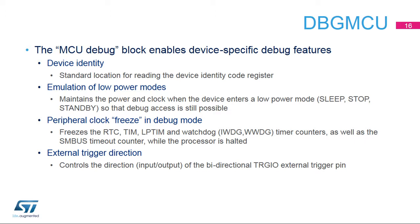Peripheral clock freeze is particularly useful to prevent a watchdog timeout from resetting the device while debugging, without having to rearm the watchdog with the debugger. It also allows timer values to be inspected and corresponding interrupts to be suspended until normal operation is resumed. The trace CLK EN bit ensures that the trace port output is only clocked when needed, avoiding unnecessary power consumption. On certain packages, the TRG-IN and TRG-OUT pins are not available; only the bidirectional pin is used, and the direction must be chosen using the TRG-OEN bit.